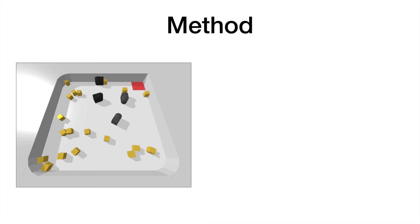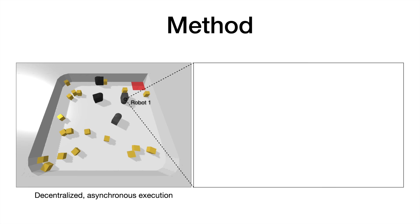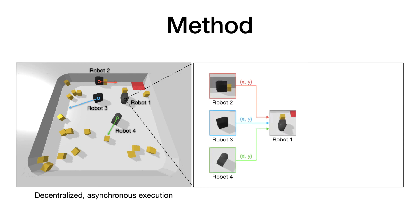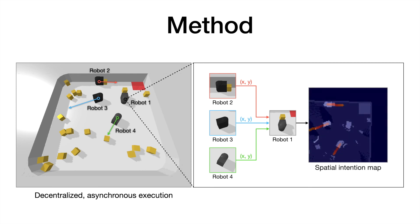We now give a more detailed overview of our method. We use decentralized asynchronous execution with communicating agents. Here, Robot1 is currently choosing a new action. The other robots, which are all currently in motion, send their intentions as XY waypoints to Robot1. Then, Robot1 spatially encodes the intentions into a map, which we call the spatial intention map.